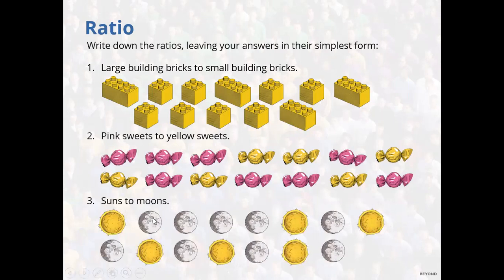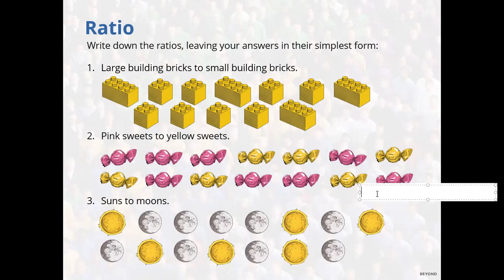The ratio of suns to moons: the sun is the yellow one, the moon is the gray one. There are six suns and nine moons - so six to nine. You simplify it: six divided by three is two, nine divided by three is three, so it becomes two to three. For every two suns you have three moons.